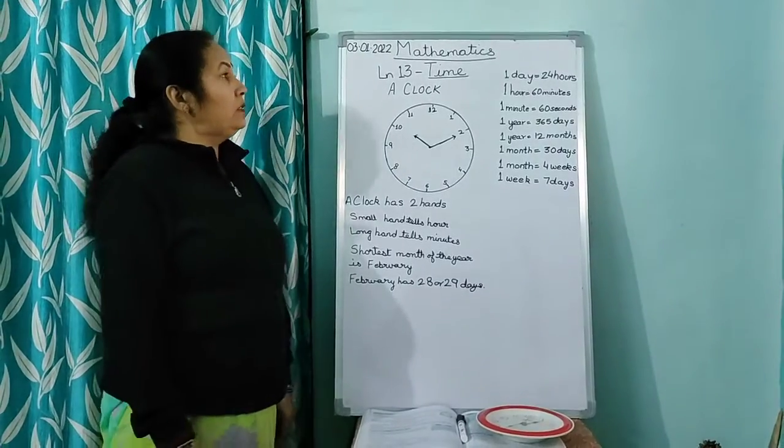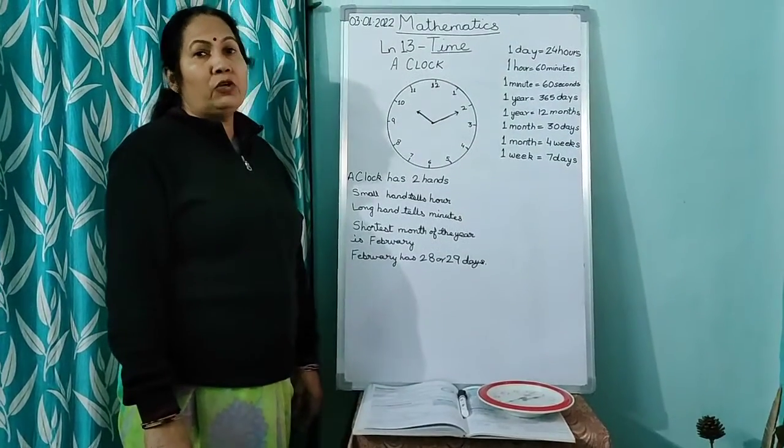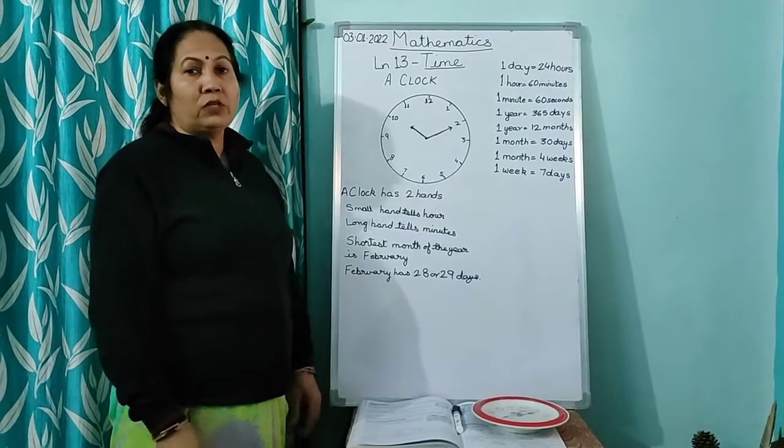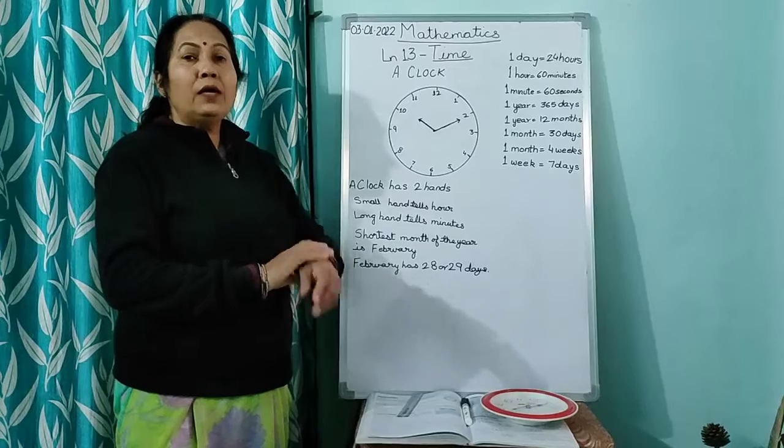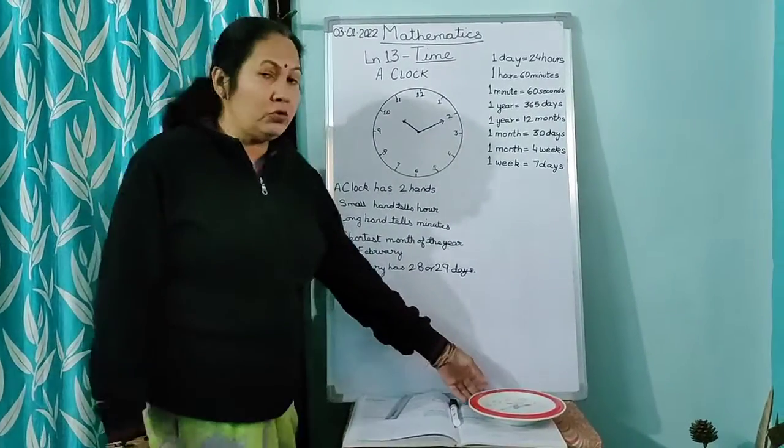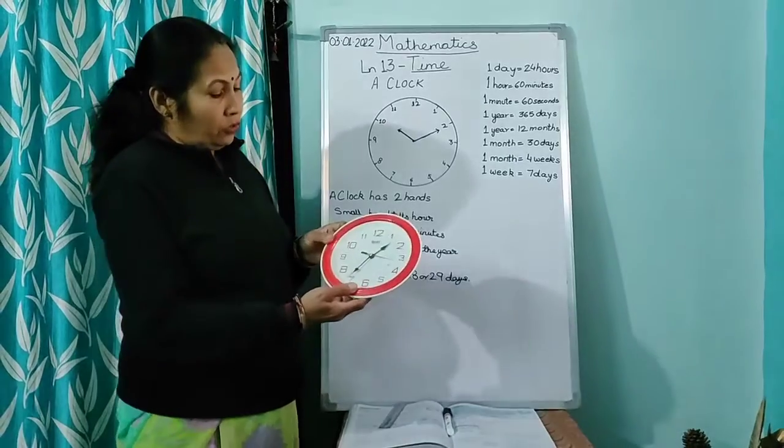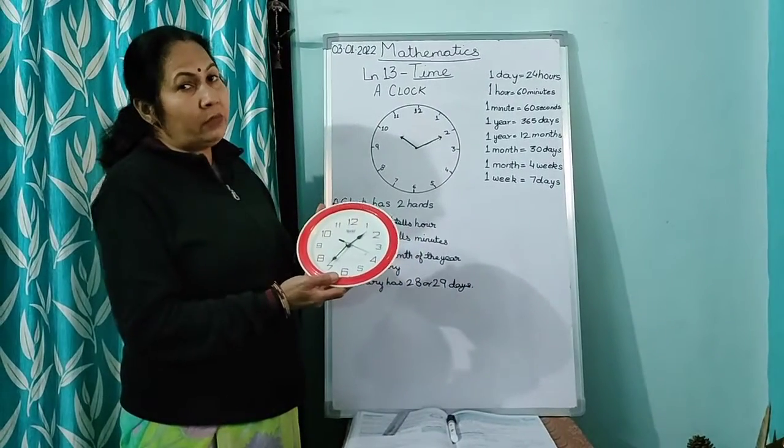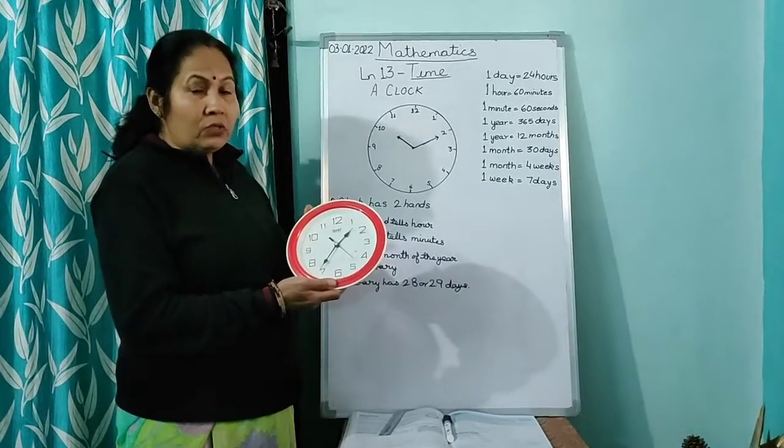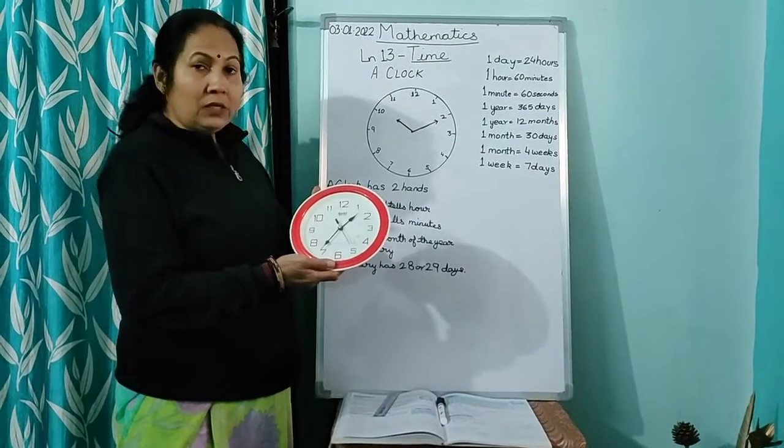In this chapter, you all have a clock at home and you all know what is a wristwatch. A wristwatch is worn on the hand. I am going to show you this clock. All of you must be having a clock at home and you must know how to see the time also.